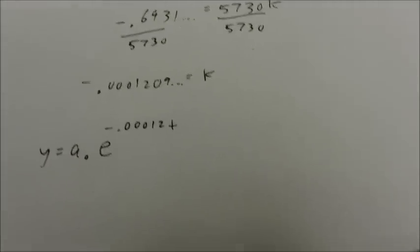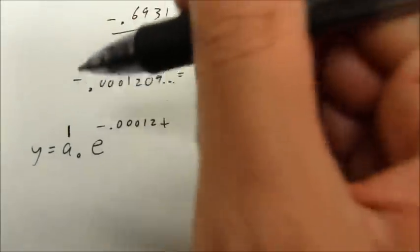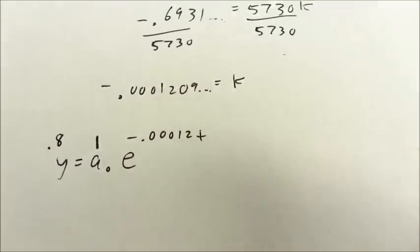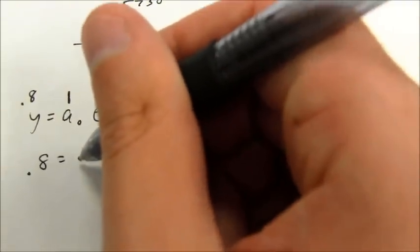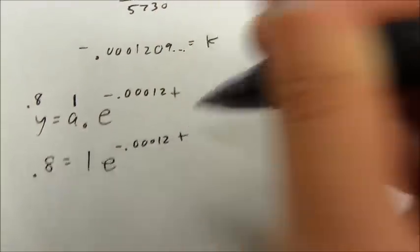And now I can substitute this in. Again, if I have 80% of my carbon-14 remaining, that's saying when I have one unit here for a-naught, after that amount of time goes by, I'm going to have 0.8 remaining. So the equation I want to solve here is 0.8 equals 1 e to the negative 0.0012t power.